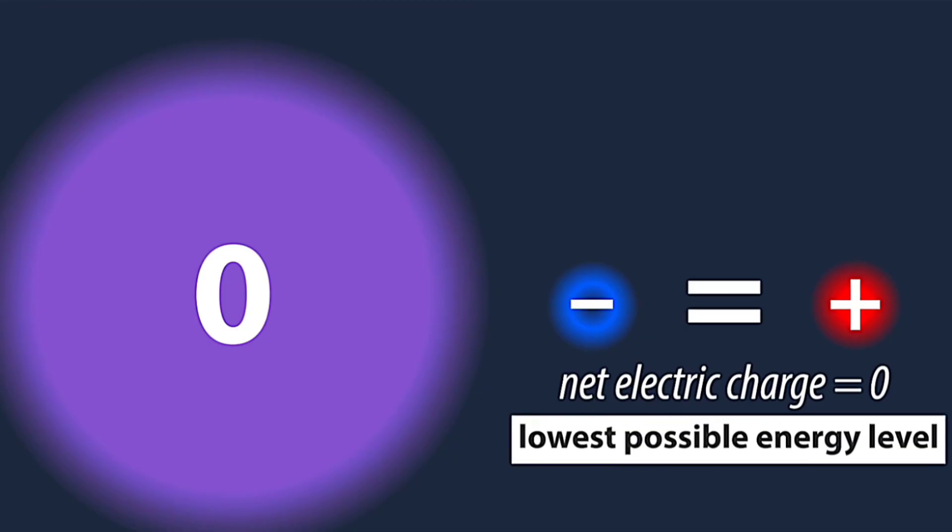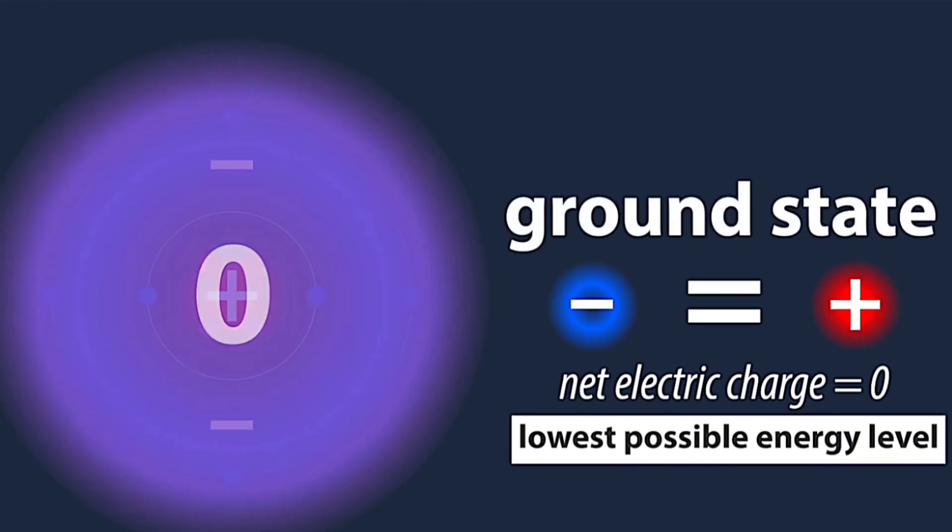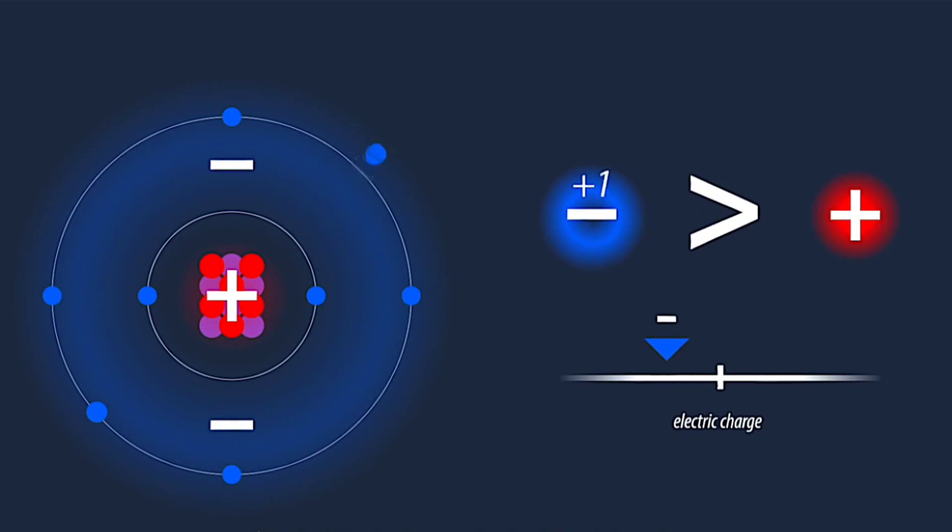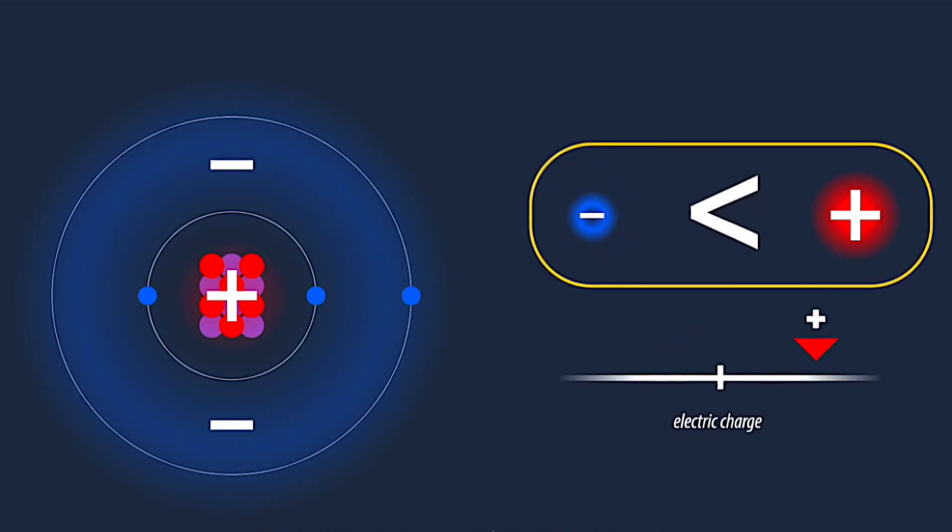Atoms are uncharged in the ground state, but when atoms lose or gain electrons, the atomic charge will lose balance, thus forming positive or negative ions.